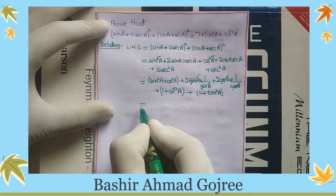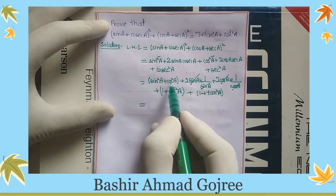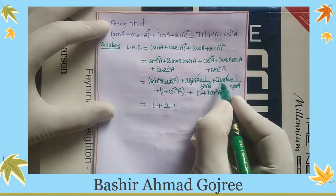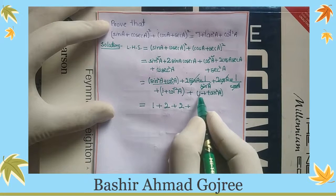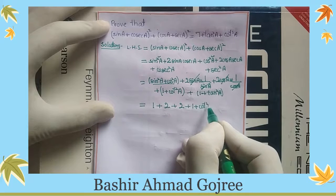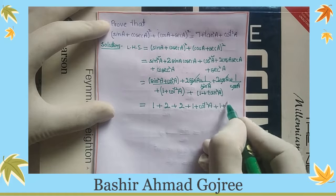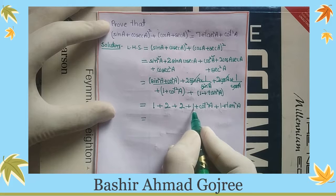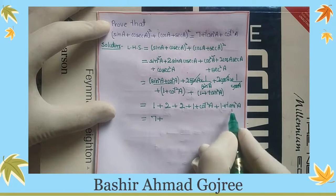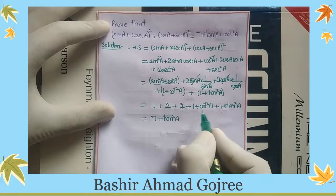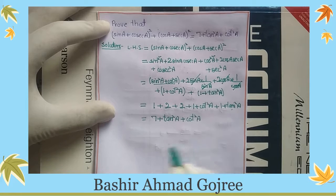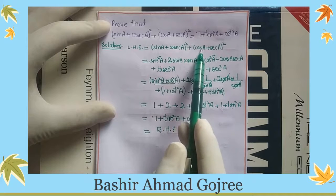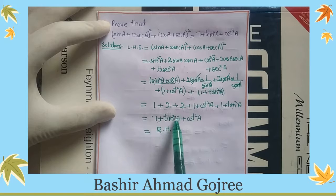This is identity number 1 which we have used: sin square A plus cos square A is equal to 1. Substituting and simplifying: 2 plus tan square A, then further combining terms, we arrive at 7 plus tan square A plus cos square A, which equals the RHS. Hence proved.